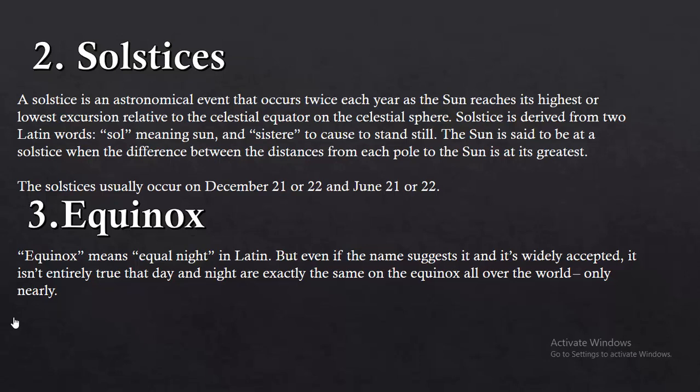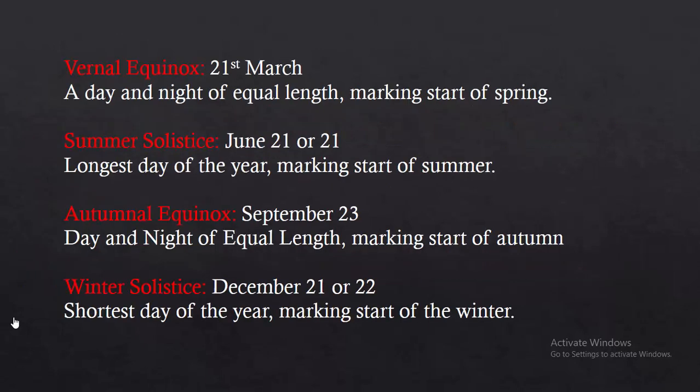The second effect is the solstice. A solstice is an astronomical event that occurs twice each year. It is the opposite of equinox. These events mark the beginning of seasons. The vernal equinox, where day and night are equal length, marks the start of spring. After that comes the summer solstice, which is the longest day of the year, marking the start of summer. Then there is the autumnal equinox, where day and night are again equal length, marking the start of autumn. Finally, the winter solstice is the shortest day of the year, marking the start of winter.